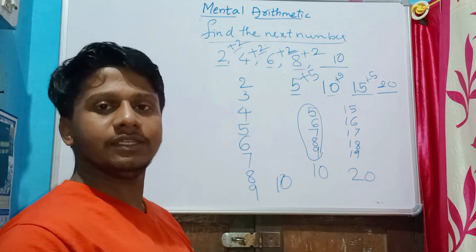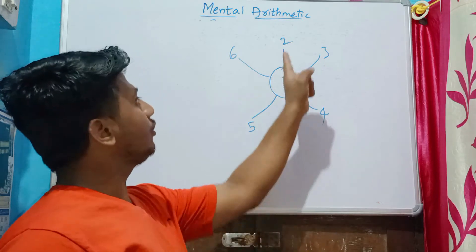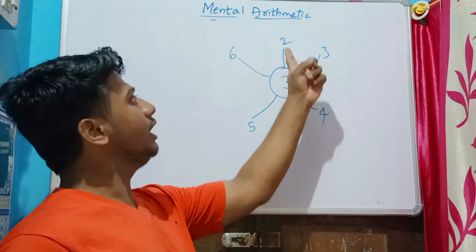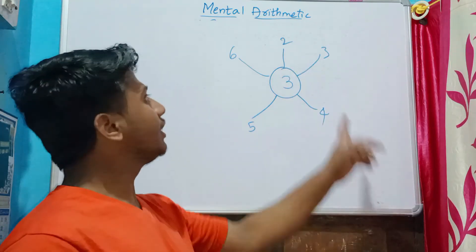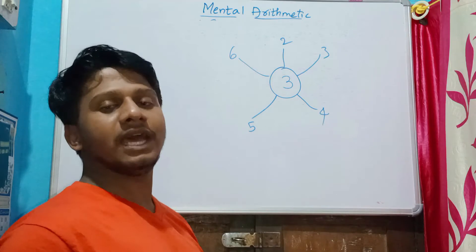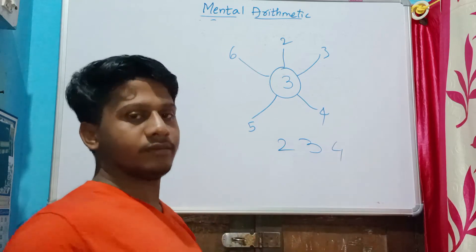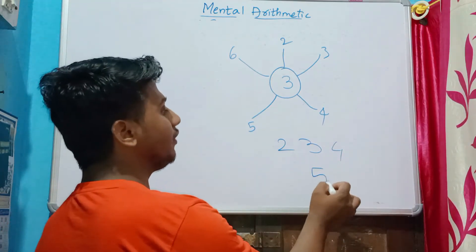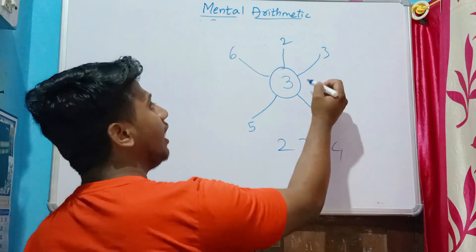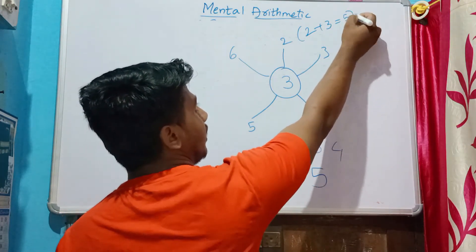Here you can see there is a number at the center and around it we have other numbers. We have to add the center number to each of the outside numbers. So two plus three — after two: three, four — you get five. So two plus three equals five.